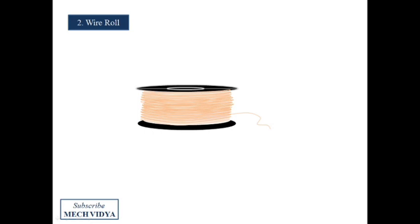Now our next element is the wire electrode. The electrode is a consumable type, that is it gets deposited in the weld pool and it is continuously fed in the welding region from this roll.